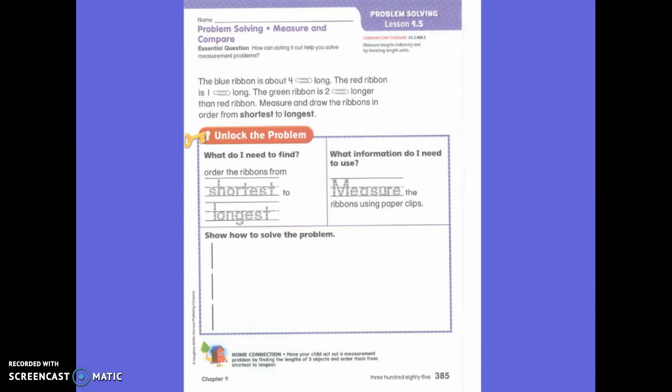What important information should I circle? Four, one, and two. Four paperclips. One paperclip long. And two paperclips longer than the red ribbon. I am going to highlight that the blue is four paperclips long, that the red is one paperclip long, and that the green is two longer than the red. Does everyone see that?